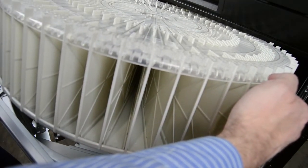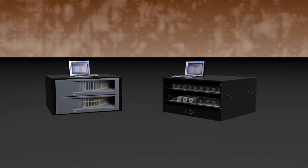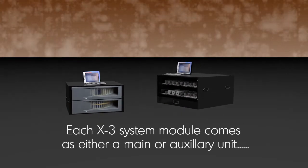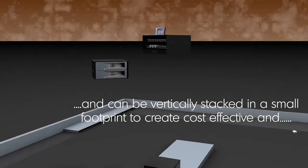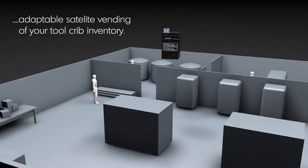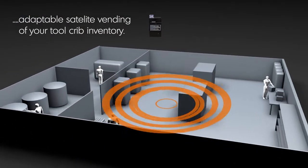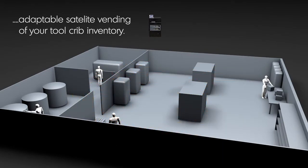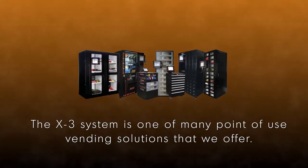Each X3 system module comes as either a main or auxiliary unit and can be vertically stacked in a small footprint to create cost-effective and adaptable satellite vending of your Toolcrib inventory. The X3 system is one of many point-of-use vending solutions that we offer.